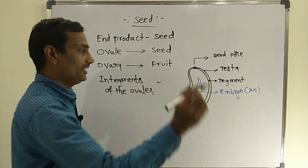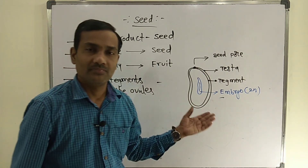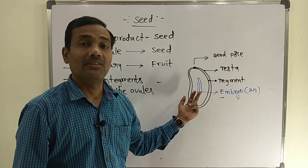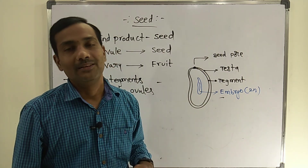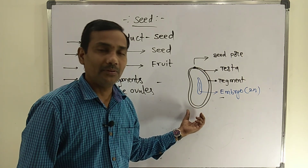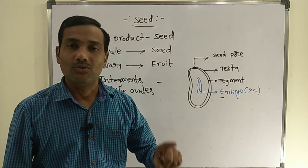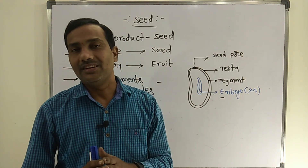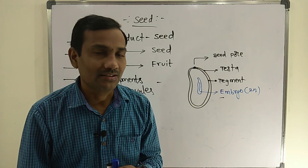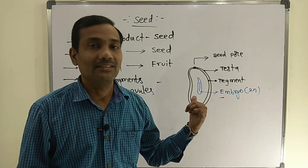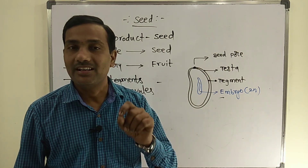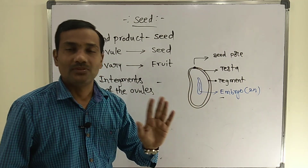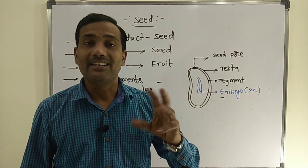Embryos are of two different types. The dicot embryo consists of two cotyledons, whereas the monocot embryo consists of a single cotyledon. Depending upon the type of seed, you can observe either a monocot or dicot embryo. If the seed is a dicot seed, it consists of a dicot embryo; if it is a monocot seed, you can observe a single cotyledon inside.